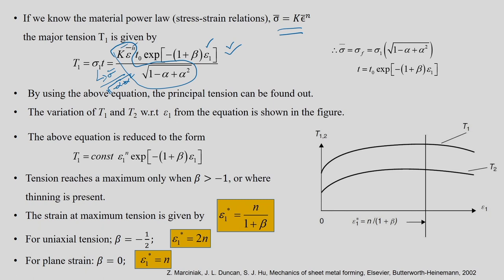K and n are the strength coefficient and strain hardening exponent; t_0 is initial thickness; beta is the strain ratio; alpha is the stress ratio; and the only variable is epsilon_1. By knowing beta you can get epsilon_2 and epsilon_3, then epsilon_bar. Finally, t_1 as a function of epsilon_1 and t_2 as a function of epsilon_1 can be drawn.